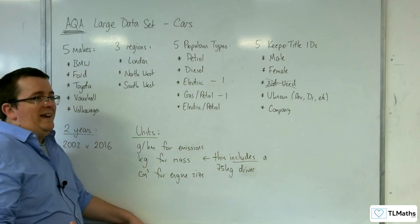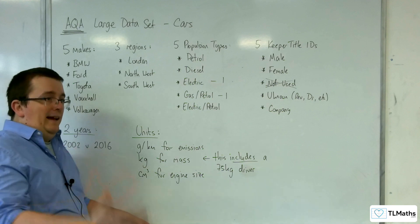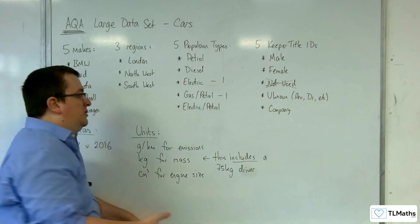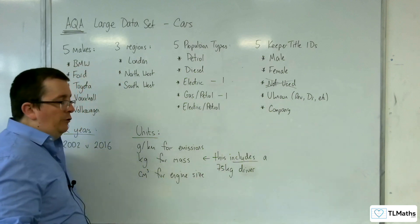So if, for example, a question said what is the actual mass for a car in the data set, then you need to subtract 75 kilos from it.